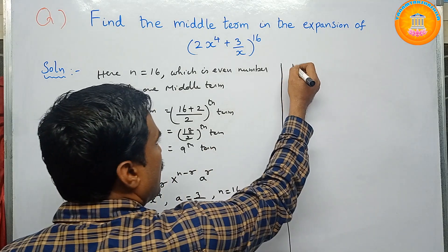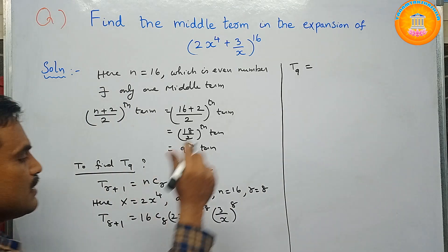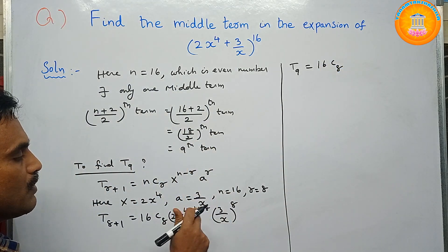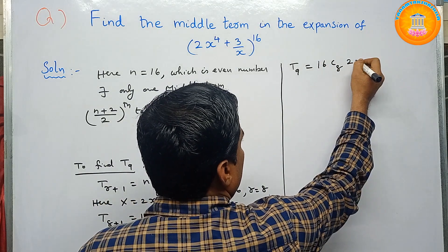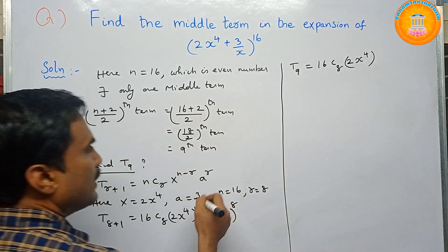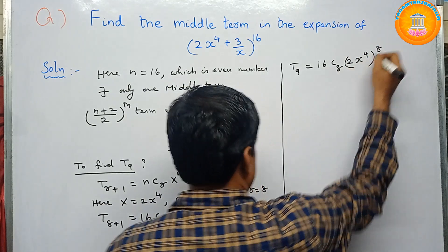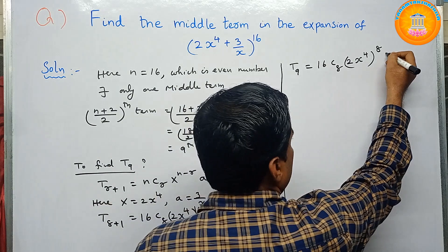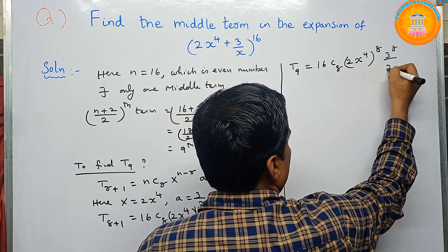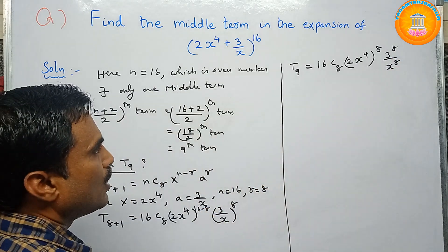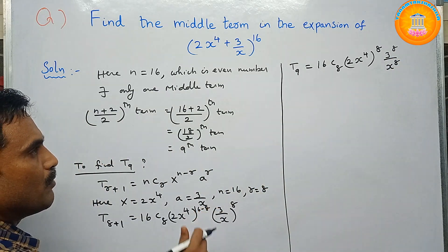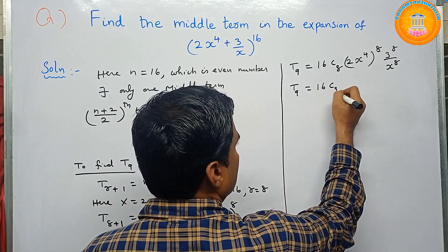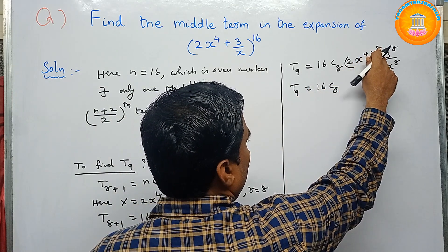Simplifying: T9 = 16C8 · (2x^4)^8 · (3^8 / x^8). Applying the power of 8 to (2x^4) gives 2^8 · x^(4×8) = 2^8 · x^32. The term (3/x)^8 gives 3^8 / x^8.